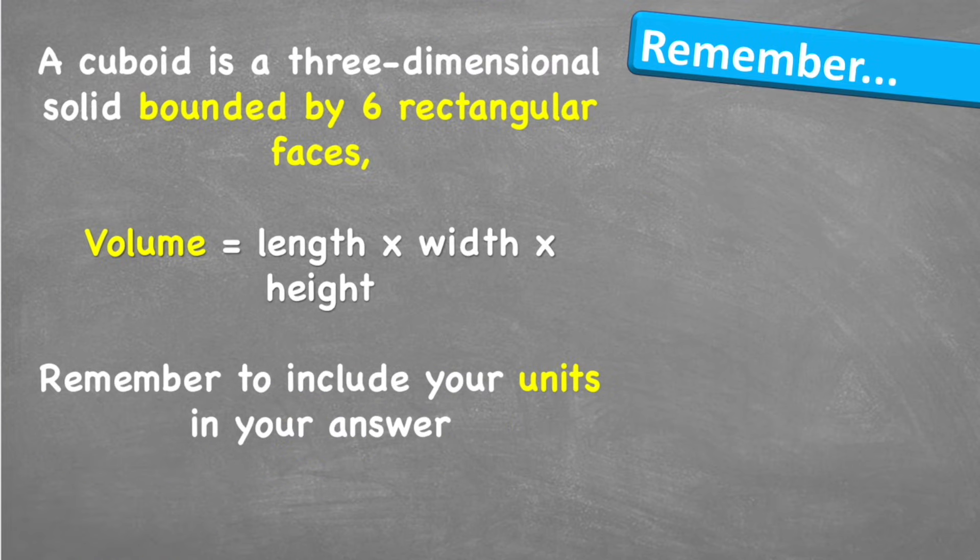A cuboid is a three-dimensional solid bound by six rectangular faces. Volume equals length times width times height. And remember to always include your units in your answer.